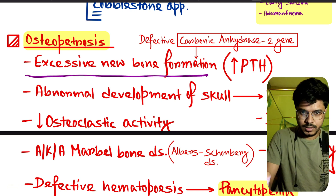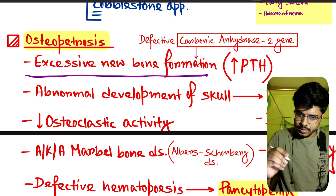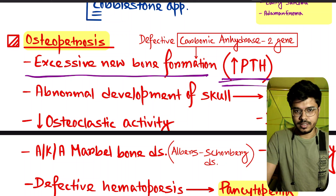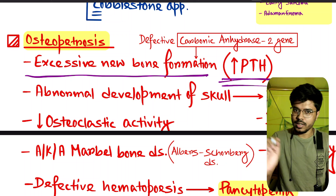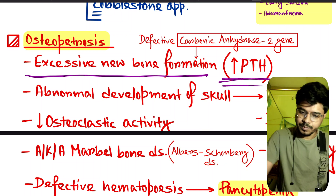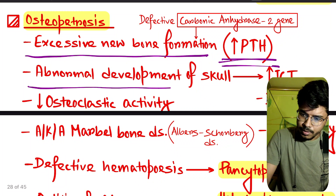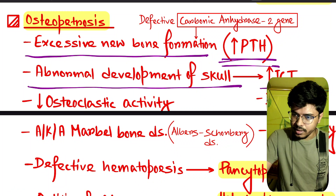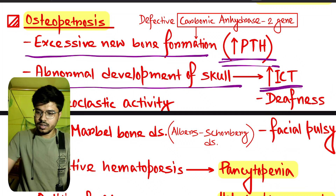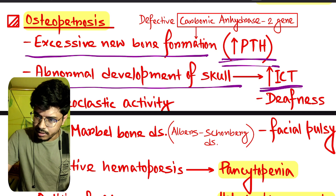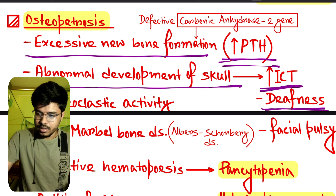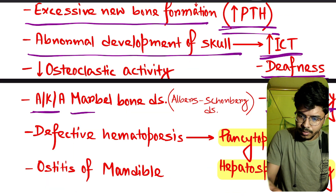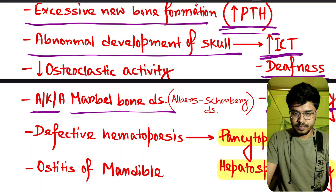There is excessive new bone formation, so there is increased PTH (parathyroid hormone). Due to abnormal development of the skull, there is increased intracranial pressure, deafness, and facial palsy.